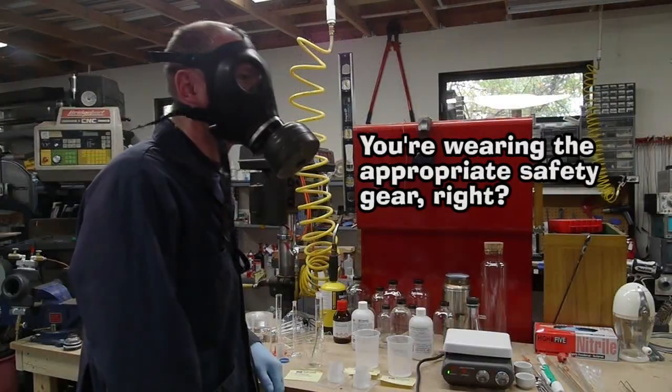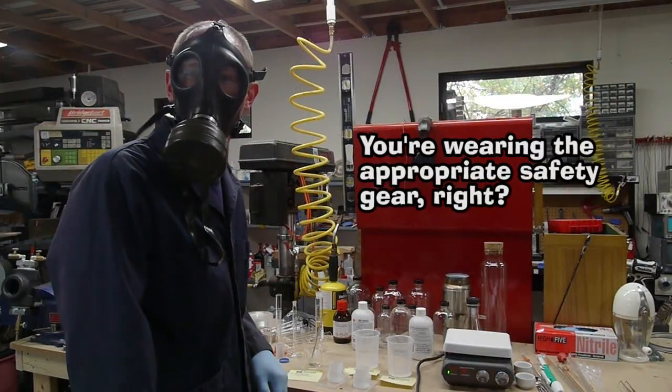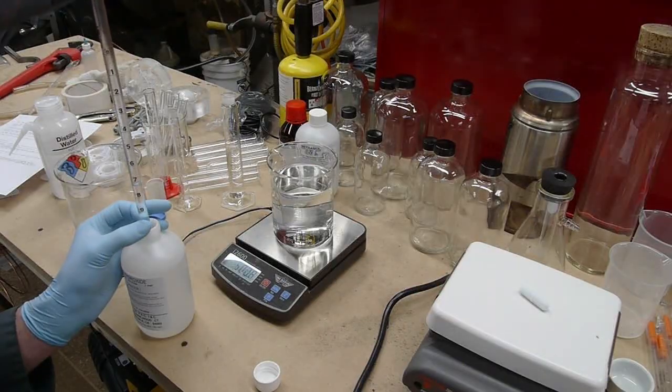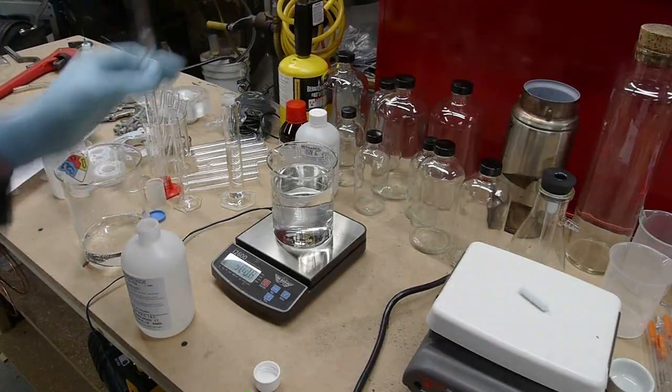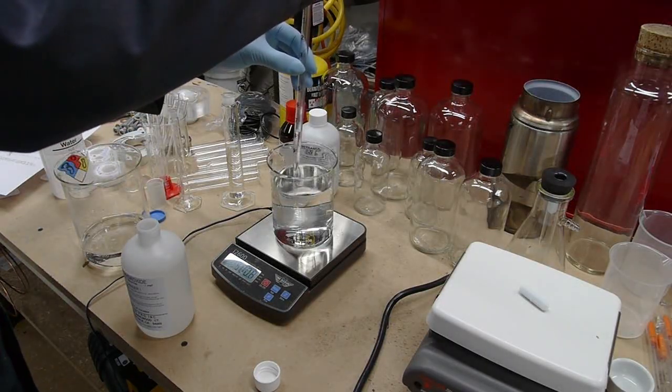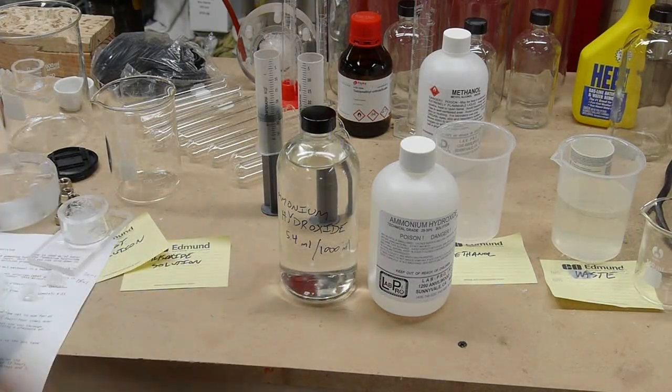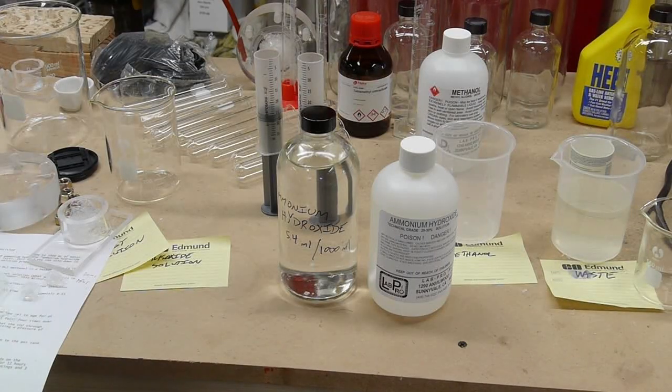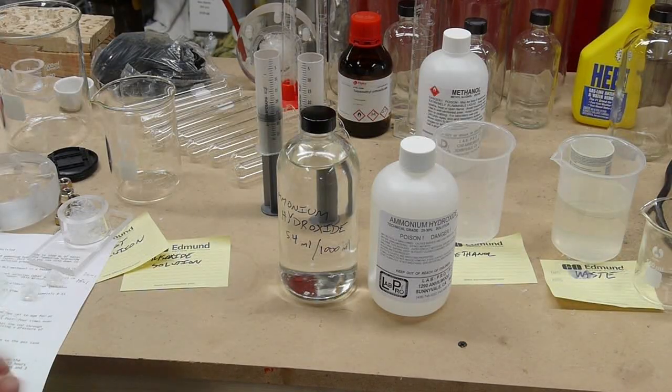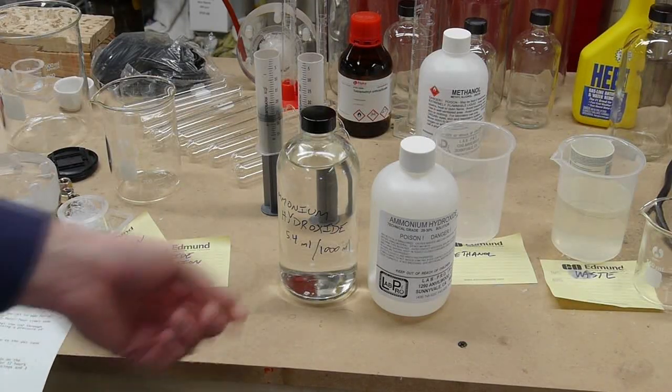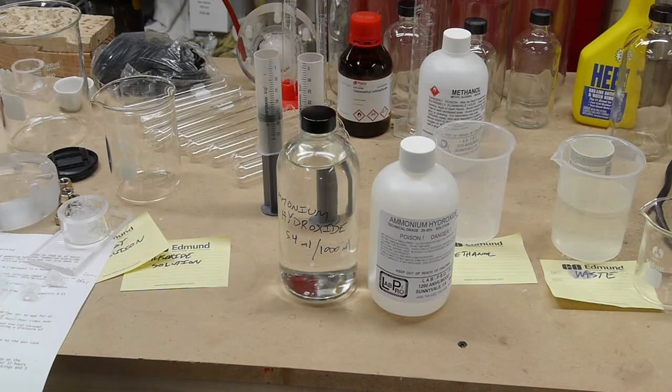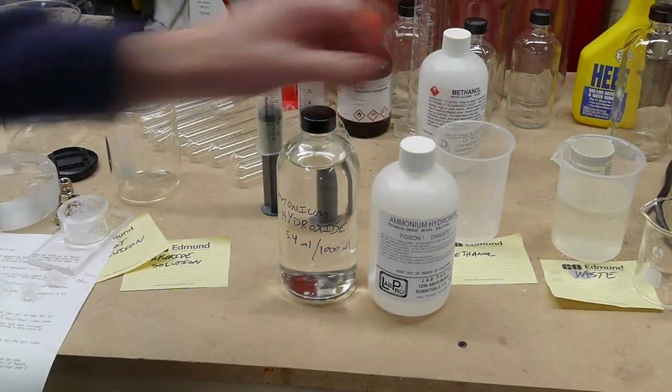So I followed the directions off of aerogel.org pretty closely. The first step is just to measure out a little ammonium hydroxide. Concentrated ammonium hydroxide is about 29 to 30 percent. And I got this, as you can see, at LabPro. LabPro actually will sell chemicals to individuals. These guys are based in Sunnyvale or Santa Clara, right around here. But they wouldn't order tetramethyl orthosilicate for me because they didn't even have a source for it. I got this chemical from Sigma Aldrich and Sigma Aldrich won't even ship chemicals to LabPro because they're worried that LabPro will resell them to individuals. It's really quite ridiculous. But anyway, you can get some stuff from LabPro that isn't too exotic.